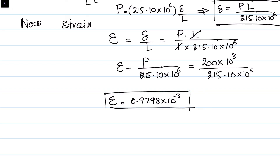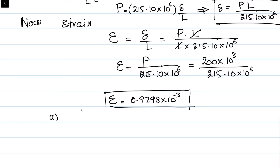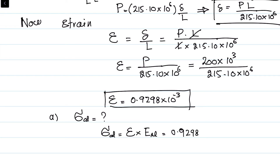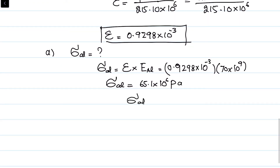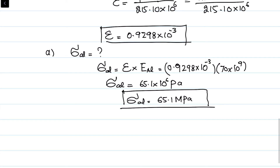For part (a), we find the stress in the aluminum shell. Stress in aluminum = strain × modulus of elasticity of aluminum = 0.9298 × 10⁻³ × 70 × 10⁹ = 65.1 × 10⁶ pascal, or 65.1 MPa. This is the answer to part (a).